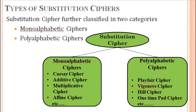Next, types of substitution cipher. Substitution ciphers are classified in two categories: mono-alphabetic and poly-alphabetic. In mono-alphabetic, there are different ciphers: Caesar cipher, additive cipher, multiplicative cipher, and affine cipher, etc. Similarly, poly-alphabetic ciphers are further classified into playfair cipher, Vigenère cipher, one-time pad cipher, hill cipher, and one-time pad cipher, etc. We will study these ciphers in detail one by one in next video lectures.